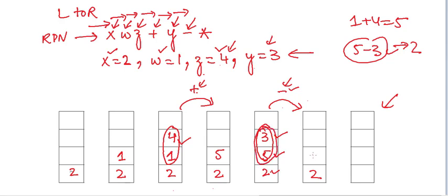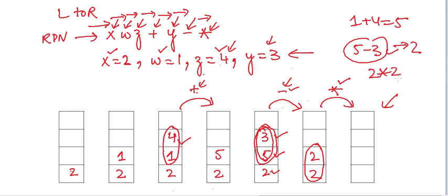Moving further right we encounter the multiply operator, so we remove the top two values from the stack — both are 2 — and compute 2 times 2, which equals 4. That is our final answer.